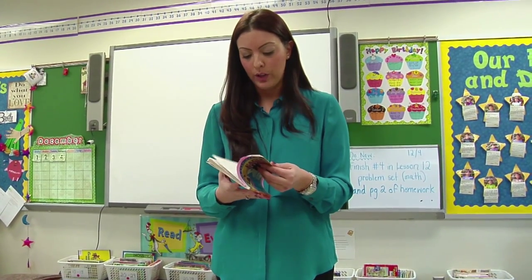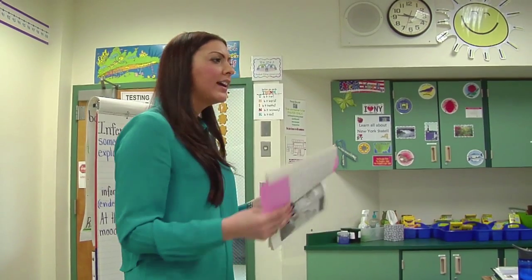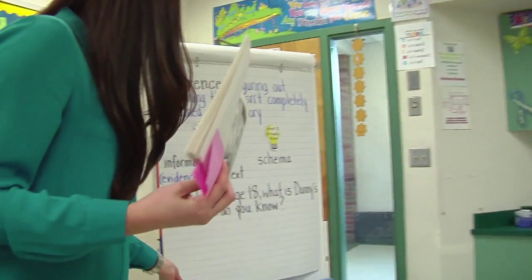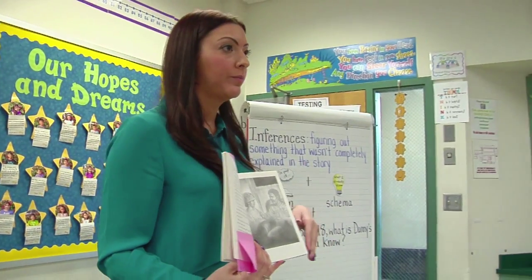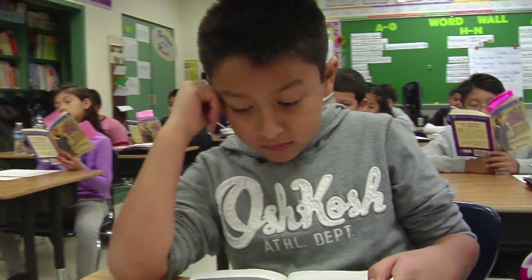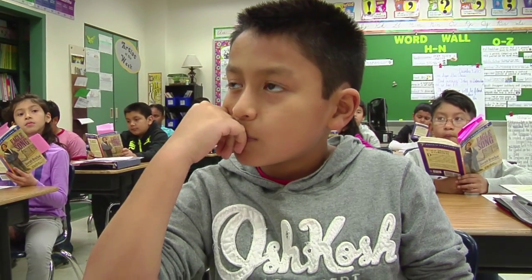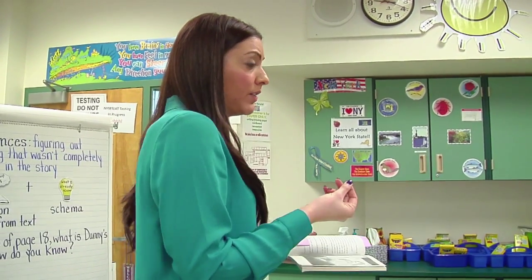Let's start on page 22 in our book. On page 22 there's text and also a photograph. Right now I'm going to model how to make an inference just based off of a picture. I notice that Danny is talking to his father, and Danny is smiling. His father is also smiling back at him. So I might say Danny is feeling excited or happy because of the smile on his face — that's the evidence.